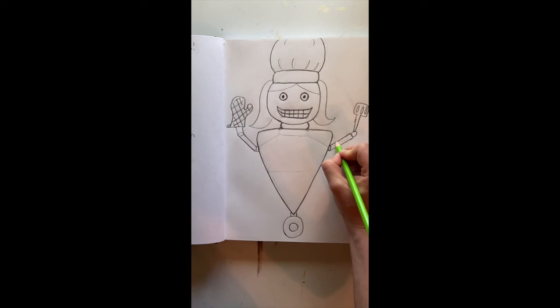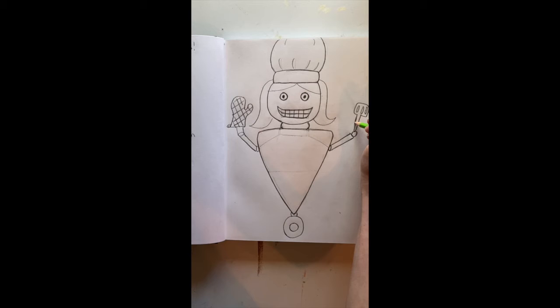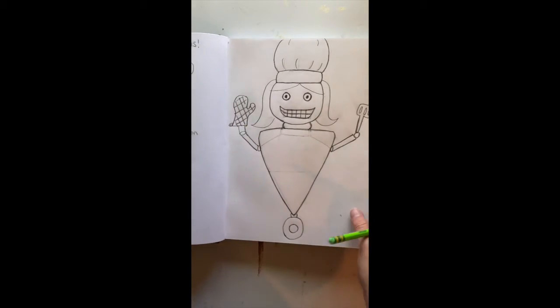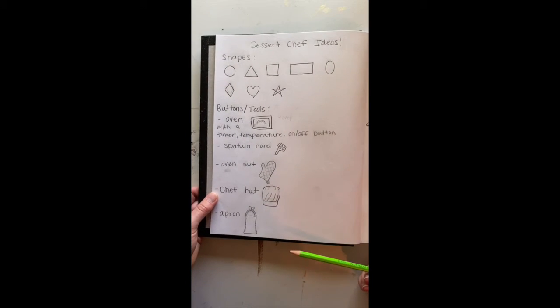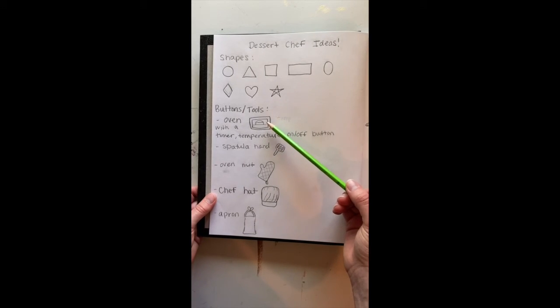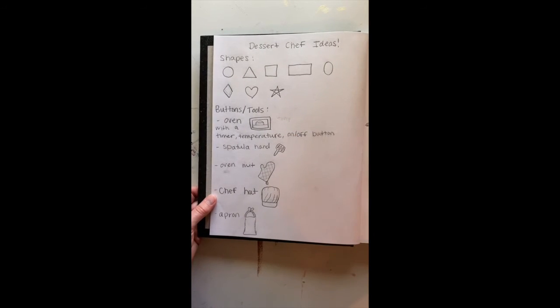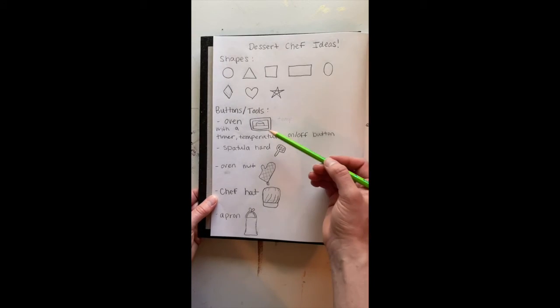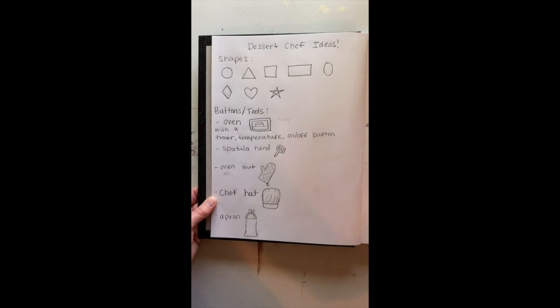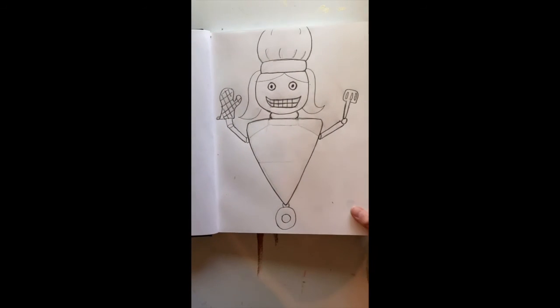Then I went through and added some ovals and rectangles and circles to create my robot's hands. So I did the spatula and the oven mitt, which I had in my design page. Now one thing that I've decided is I don't have room for an apron and an oven on this robot body. So I'm going to pick what I think is most important. And what I think is most important is that she has an oven so that she can cook sweets and things like cakes and pies.